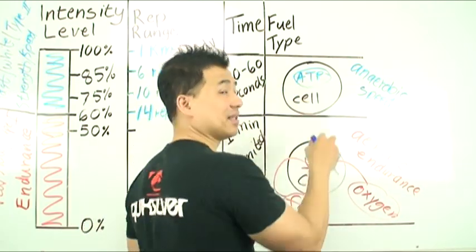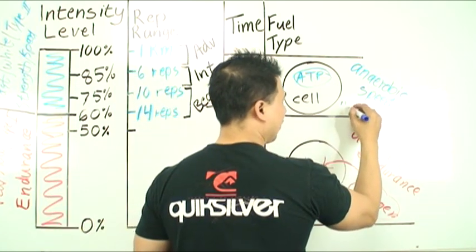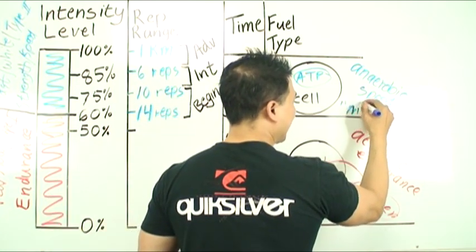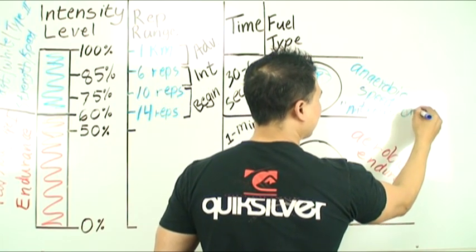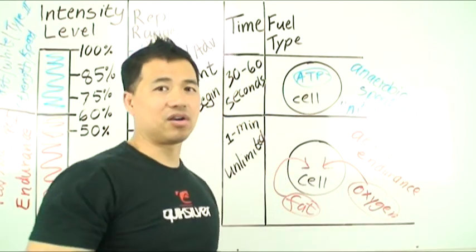You can think of the ATP and the phosphagen fuel that's inside the cell as being something like nitrous oxide in a race car. I'm going to put nitrous oxide right here.